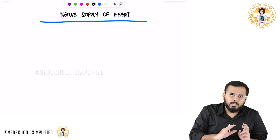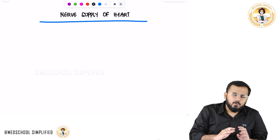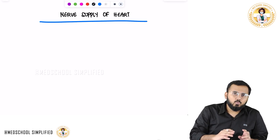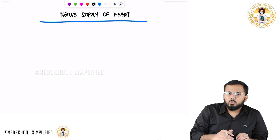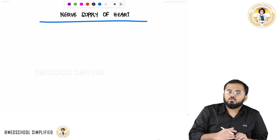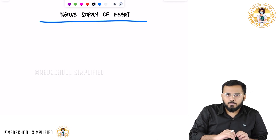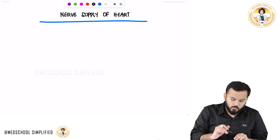Together they form the cardiac plexus. Within the cardiac plexus, there are two types: the one that is superficial is called the superficial cardiac plexus, and the one that is deep inside is called the deep cardiac plexus.